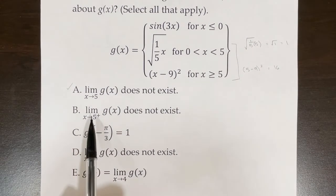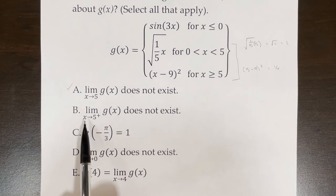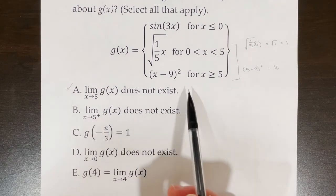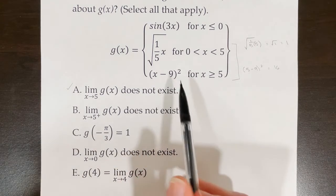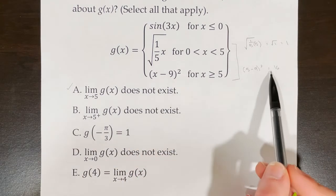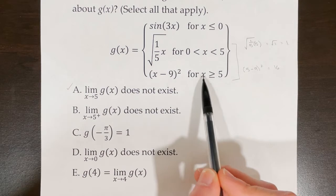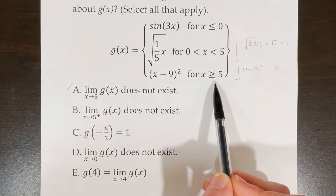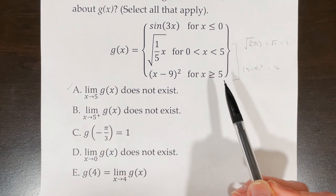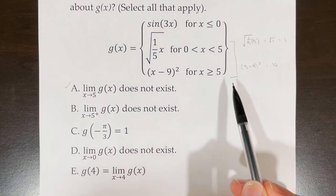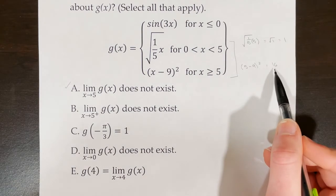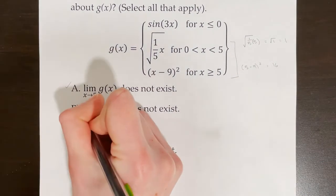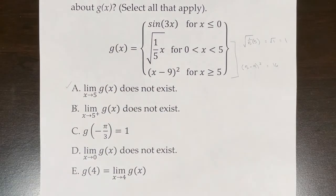Statement B asks if the right-sided limit of g of x as x approaches 5 does not exist. We just found that the right-sided limit is 16 — it does exist. So statement B is not true.